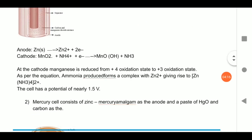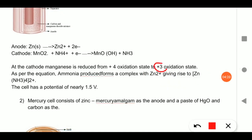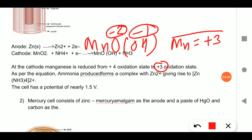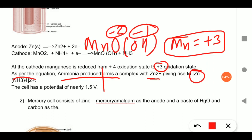At the cathode, manganese dioxide is reduced from the +4 oxidation state to +3. MnO is formed initially but reacts with water to take OH, giving MnO(OH), where oxygen is -2 and hydroxide is -1, resulting in a net +3 oxidation state for manganese. The ammonia produced then forms a complex with ZnCl2, giving [Zn(NH3)4]Cl2.